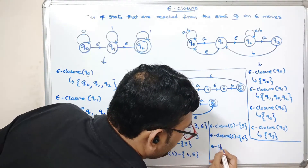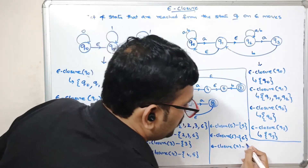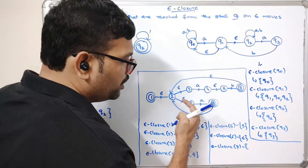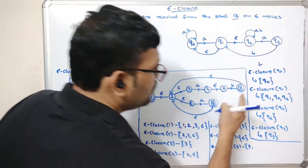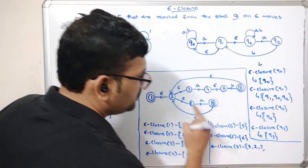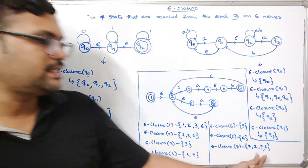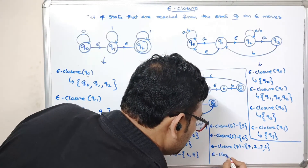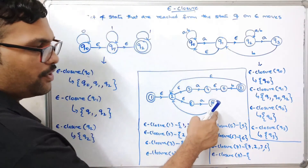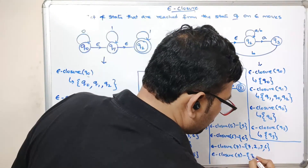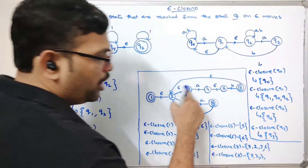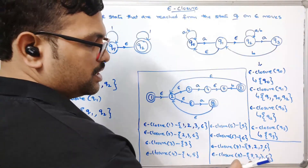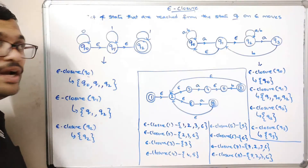Epsilon closure of 7: from state 7 there is an epsilon move to 2, from 2 it moves to 3, and from 2 it also moves to 6. So epsilon closure of 7 is {7, 2, 3, 6}. Epsilon closure of 8: from state 8 there is an epsilon move to 2, from 2 it moves to 3 on epsilon, and from 2 it also moves to 6 on epsilon. So epsilon closure of 8 is {8, 2, 3, 6}.